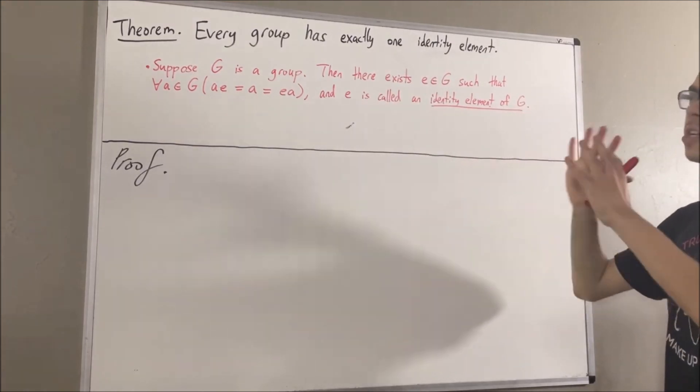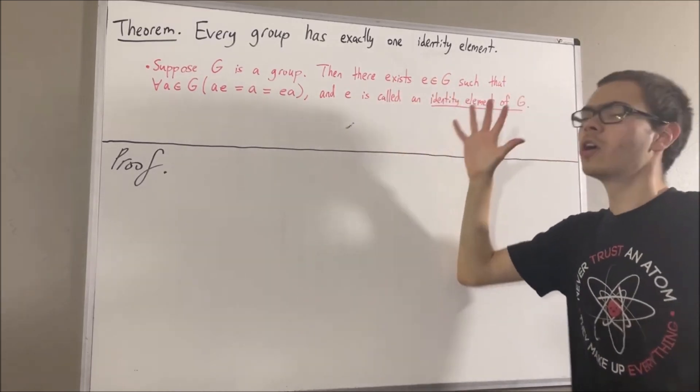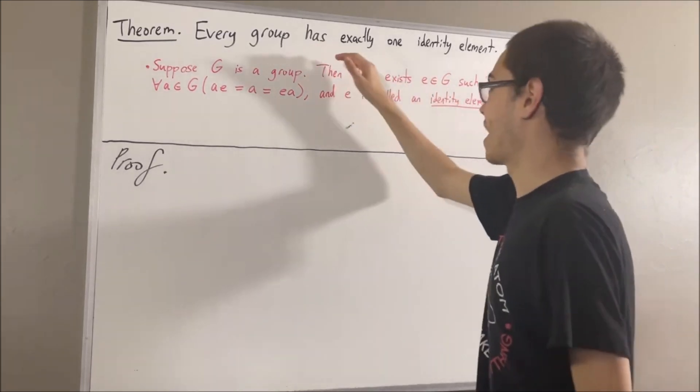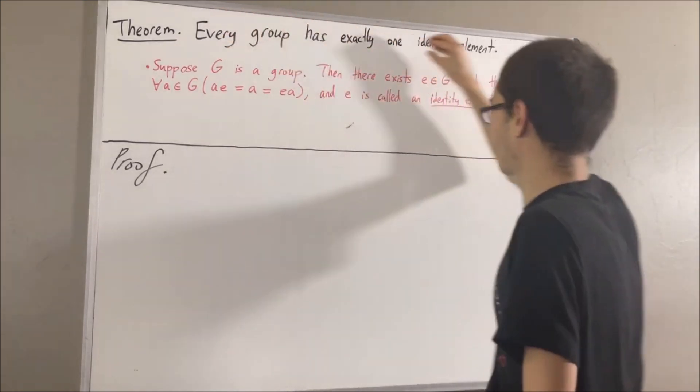Okay, so every group has an identity element. Our goal is to show that every group has only one identity element. So, let's get into proving this theorem.